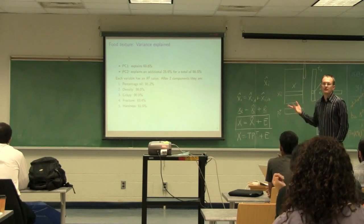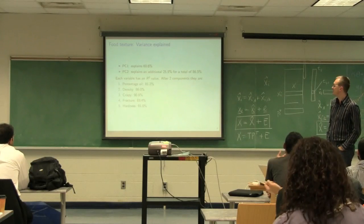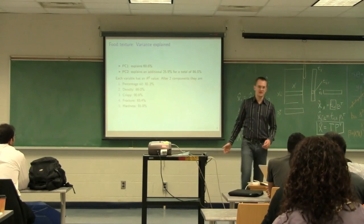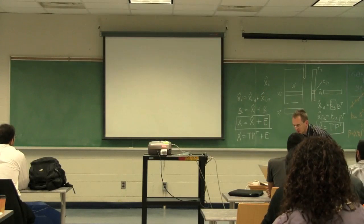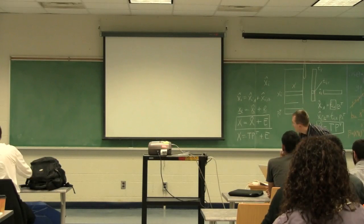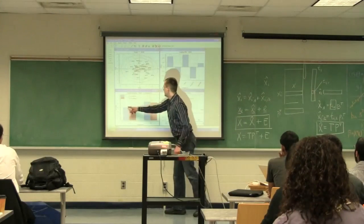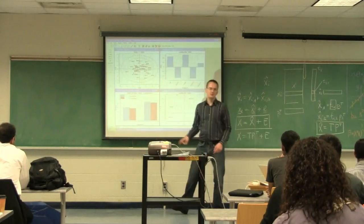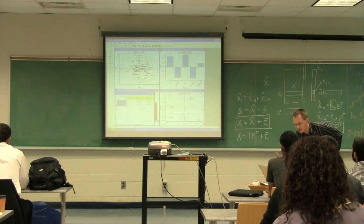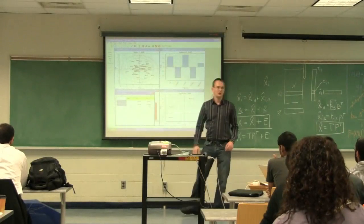Variance explained. First component, everyone agree with that number? 60% for the first component. Second component explains an additional 26%, taking us to 86%. In the software, here's the R-squared: 60%, second component cumulative is 86%.